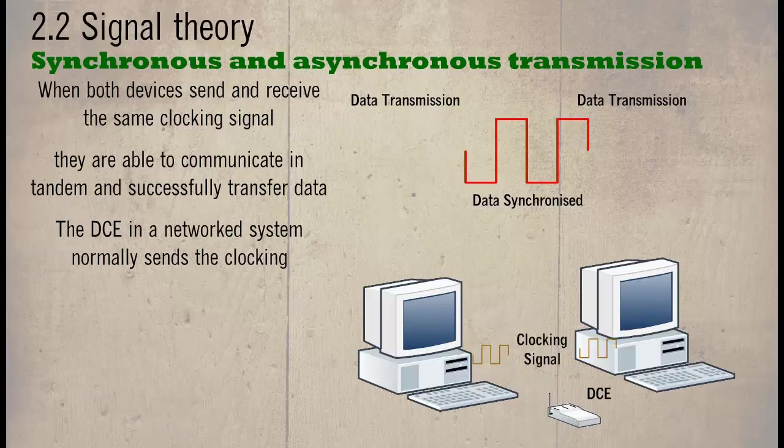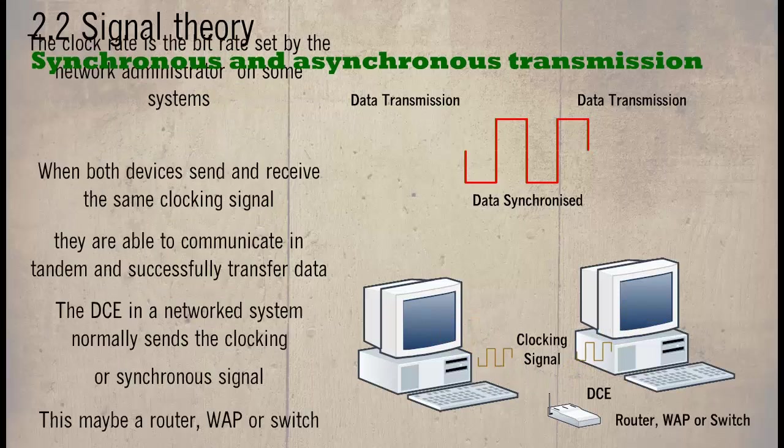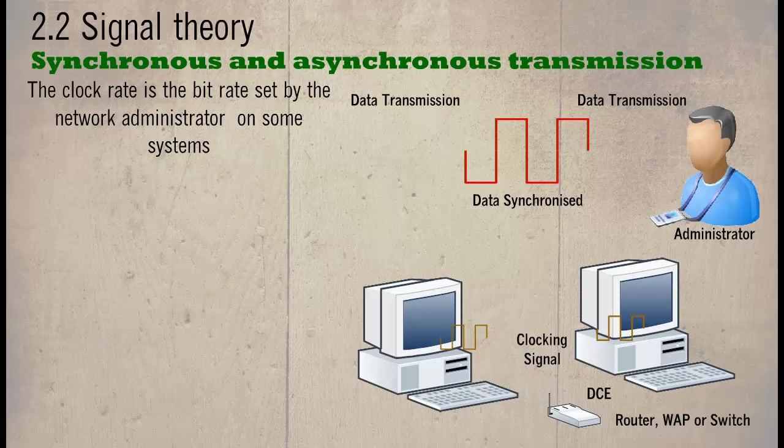The DCE in the network system normally sends the clocking or synchronous signal. This may be a router, WAP or switch. The clock rate is the bit rate set by the network administrator on some systems but may be automatic on others.